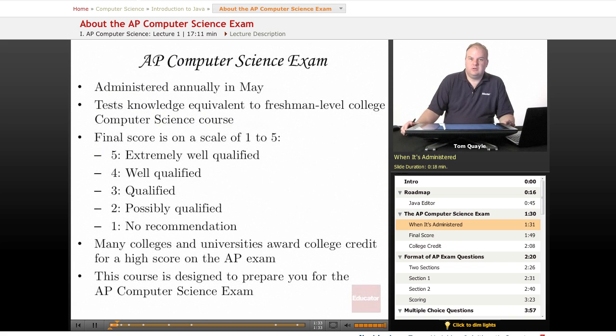The AP Computer Science exam, like all AP exams, is administered annually in May and tests knowledge equivalent to a freshman-level college computer science course. Like other AP exams, your final score is on a scale of one to five.